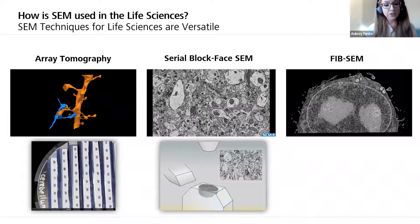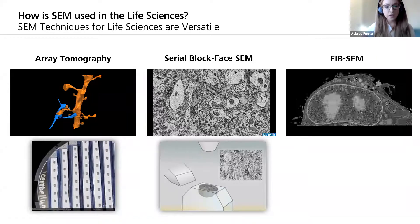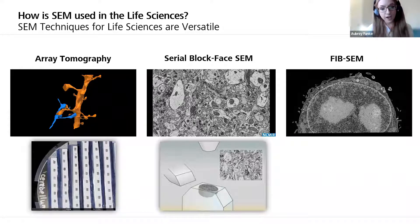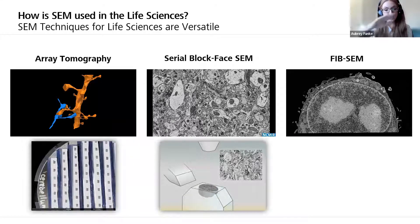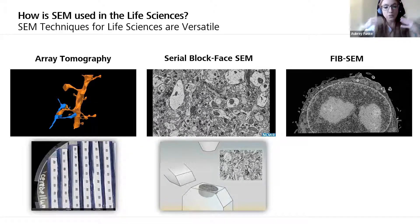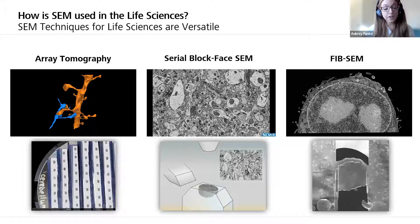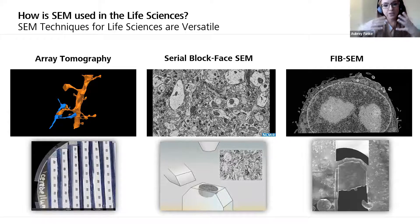Another technique is focused ion beam SEM, or FIB-SEM. Here we can use a resin-embedded, vitrified, or frozen sample and take three-nanometer slices — very fine resolution. Instead of using an ultra-microtome knife, we're actually using an ion beam to ablate away that top surface and then image it, and we can actually image as we go, which really speaks to the automation of this technology. We're also able to create lamella — areas where we spin out the sample and study them with the transmission electron microscope.